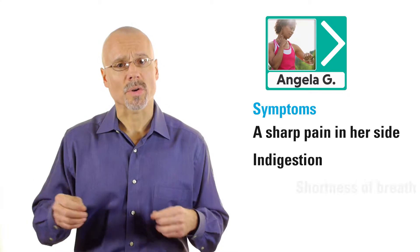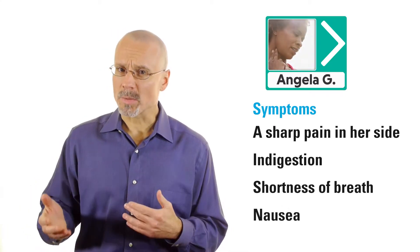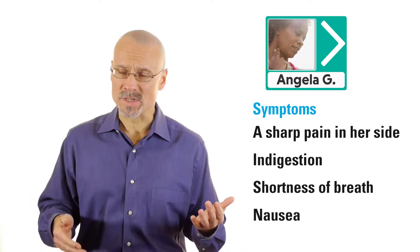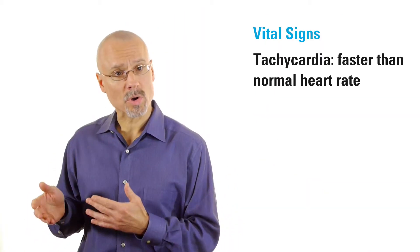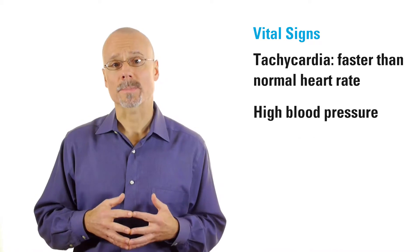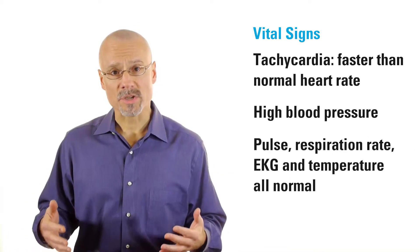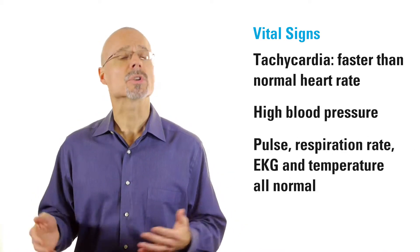After Brian's scare, let's see how Angela is doing. She's our youngest patient and seemed to be the healthiest too. Angela is 35, in pretty good shape, and does not smoke. But during a morning run, she had a sharp pain in her side, indigestion, and shortness of breath. She also vomited before and after her trip to the emergency room. Her vital signs indicated tachycardia, a faster-than-normal heart rate, and high blood pressure. But her pulse, respiration rate, EKG, and temperature were normal.